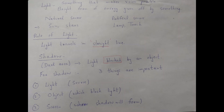Another definition: light is the bright form of energy given off by something. We know that light is a form of energy. There are two sources of light: one is the natural source and the other is the artificial one. The natural sources are the sun and stars. The artificial sources are lamp, torch, and candlelight. Make sure the moon is not a natural source of light because the moon has no light of its own.